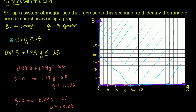So when G is 0, S is approximately 28, plotted just over 28 on the song axis. The line for 0.89S + 1.99G = 25 goes from that point all the way down to G ≈ 12.56 on the game axis. Drawing that line now — it runs from approximately (0, 28) on the song axis down to approximately (12.56, 0) on the game axis. That line represents the budget boundary.